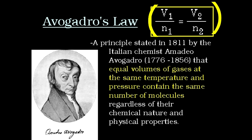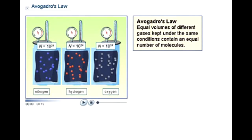Avogadro's law basically states that the number of particles N is directly proportional to the volume they take up, if the particles are a gas. Most importantly, it doesn't matter what the gas is — whether it's an elemental gas such as oxygen or hydrogen, or a compound gas made up of molecules such as carbon dioxide. Here is a diagrammatic view of Avogadro's principle: at the same temperature and pressure, each container holds the same number of particles because the volumes are the same.